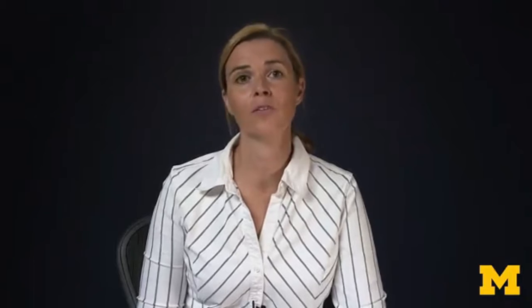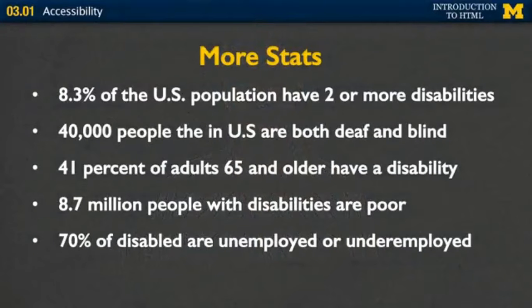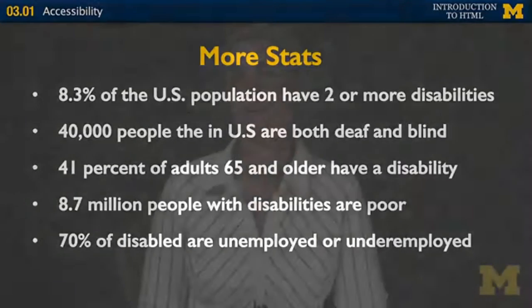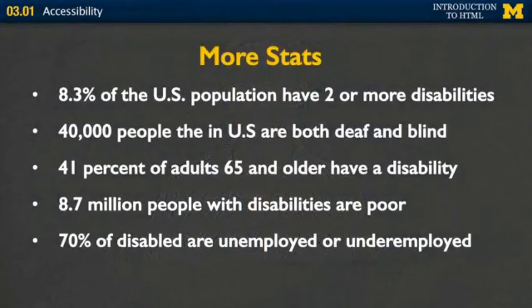Let's get to specific stats, because nothing helps convince people more that they want to design for the web than showing them the numbers. Almost 10% of the U.S. population has two or more disabilities. 40,000 people in the U.S. are both deaf and blind. 41% of adults 65 and older have a disability, and there are almost 9 million people with disabilities who are poor. 70% of the disabled are underemployed or unemployed — not because they're unable to do the jobs, but because roadblocks are put up that prevent them from doing jobs they are very well qualified for.